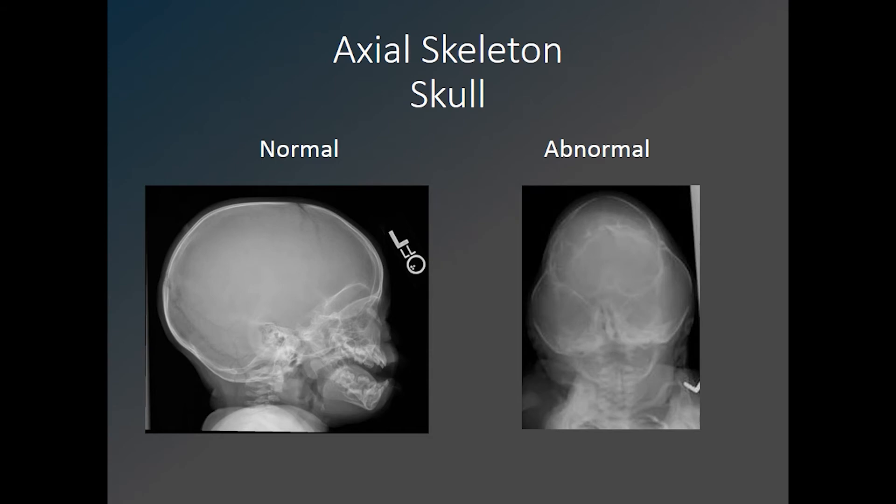Here is an AP skull radiograph in a patient with thanatophoric dysplasia, demonstrating a cloverleaf-type configuration of the skull, which is sometimes seen in this setting. This results from diffuse craniosynostosis of all of the sutures except the squamosal suture.